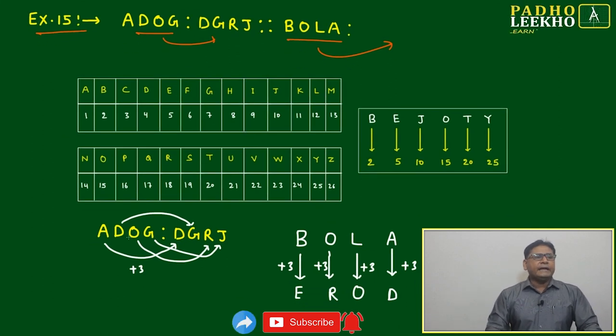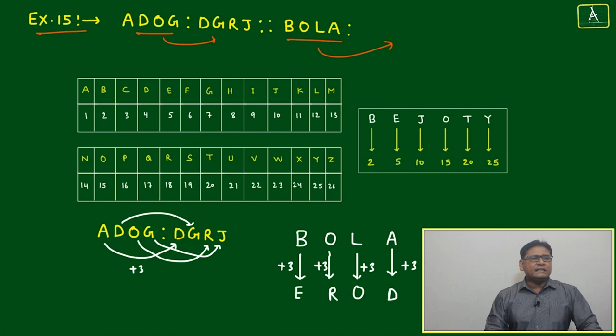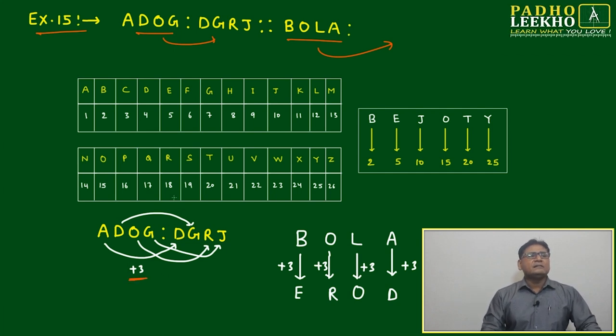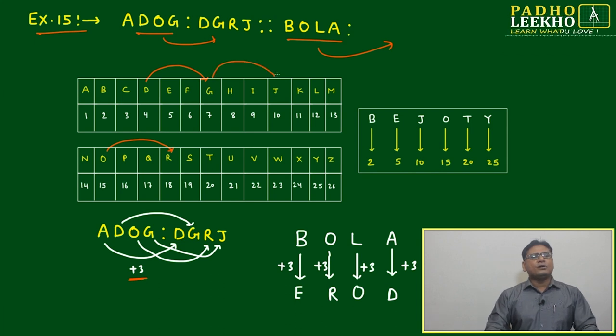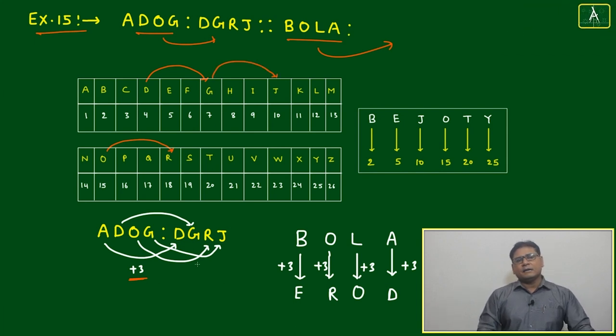ADOG: A to D is plus 3, D to G is again plus 3, O to R is again plus 3, and G to J is again plus 3. All are interrelated by plus 3.